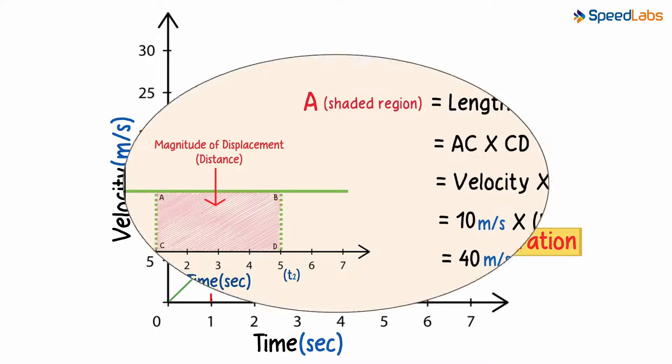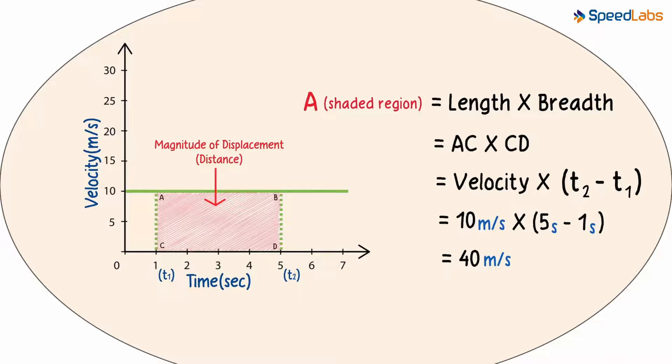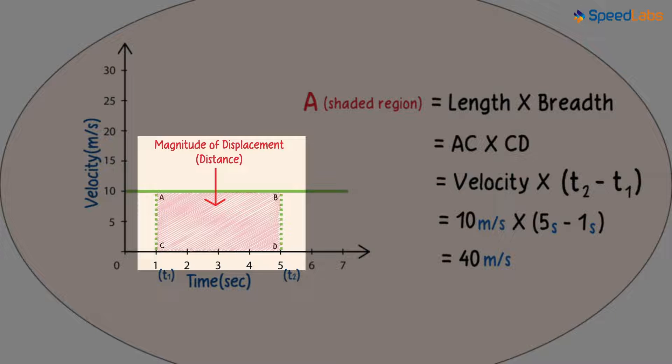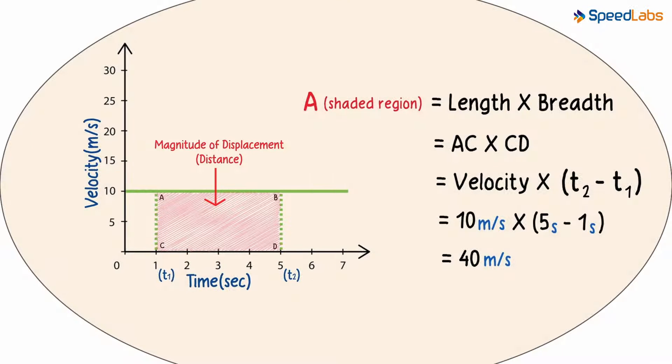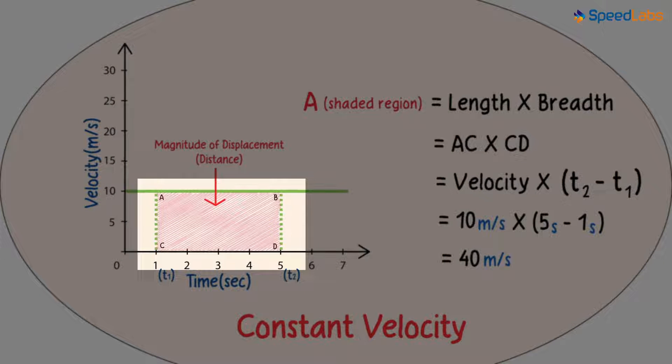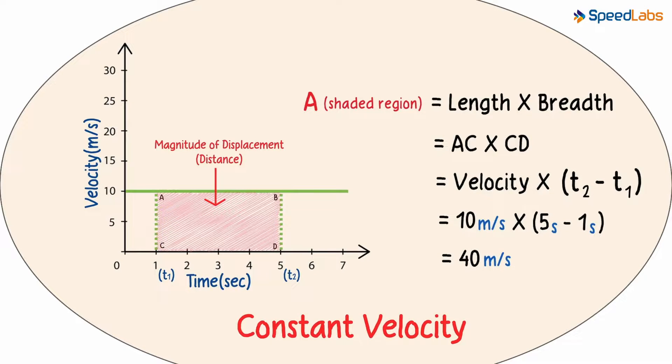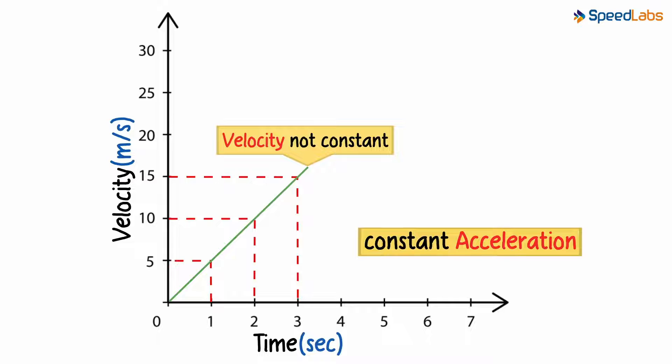In the previous part of the video, we calculated the distance covered by finding the area of the shaded region. But as the velocity was constant there, the shaded area was a rectangle. And finding the area or the distance was easy as we knew the formula for the area of a rectangle. So will our method of computing the distance covered work here in this case? Yes it will, and this is how we do it.